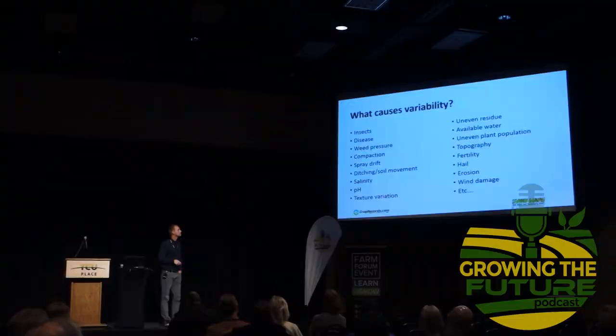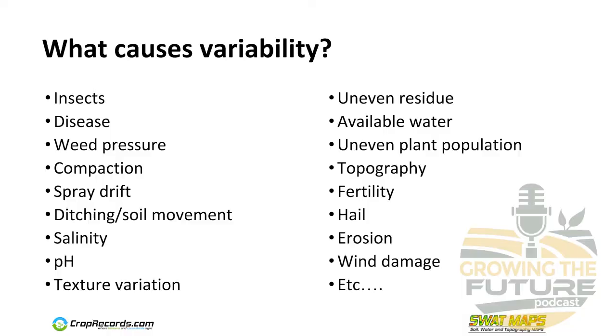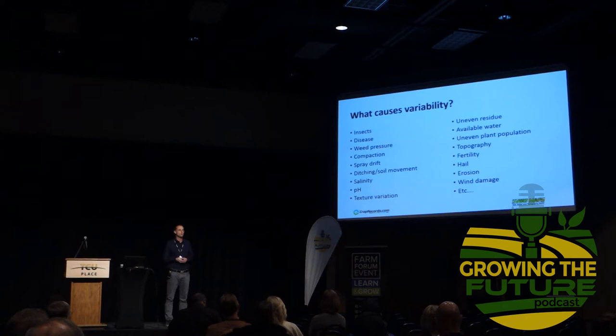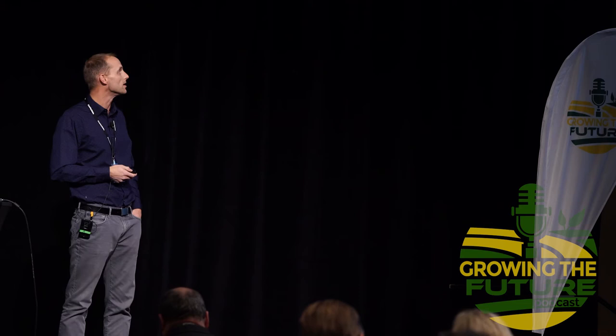What causes variability? There's a lot of things on this list, and we could probably triple it with all the things that cause variability. Unfortunately, a lot of them are temporal — one year in, next year they're gone. Maybe it's cutworms, maybe it's heavy sclerotinia pressure in a rich depression where the crop is very heavy and lodged, maybe it's spray drift from a neighbor. But are you really going to change anything the next year because of things like that? Probably not.